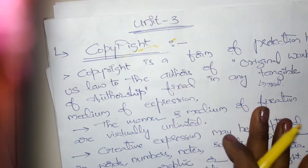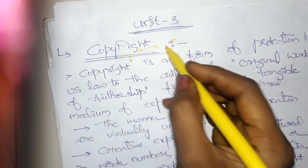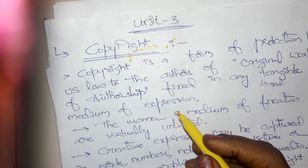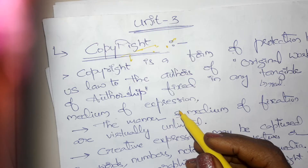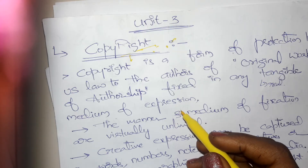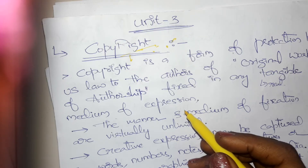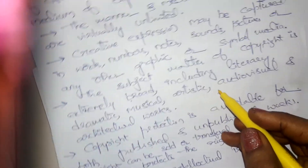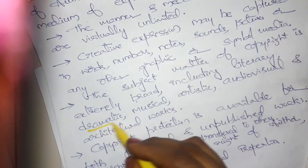Now we will see unit 3. In unit 3 you will be having the copyright. Already we have seen what is a copyright. Copyright is nothing but a literary and artistic work can be protected by using the copyright. What do you mean by literary work means writing of books, poems, stories — that all comes under the literary work, and for literary works and for dramatic work.